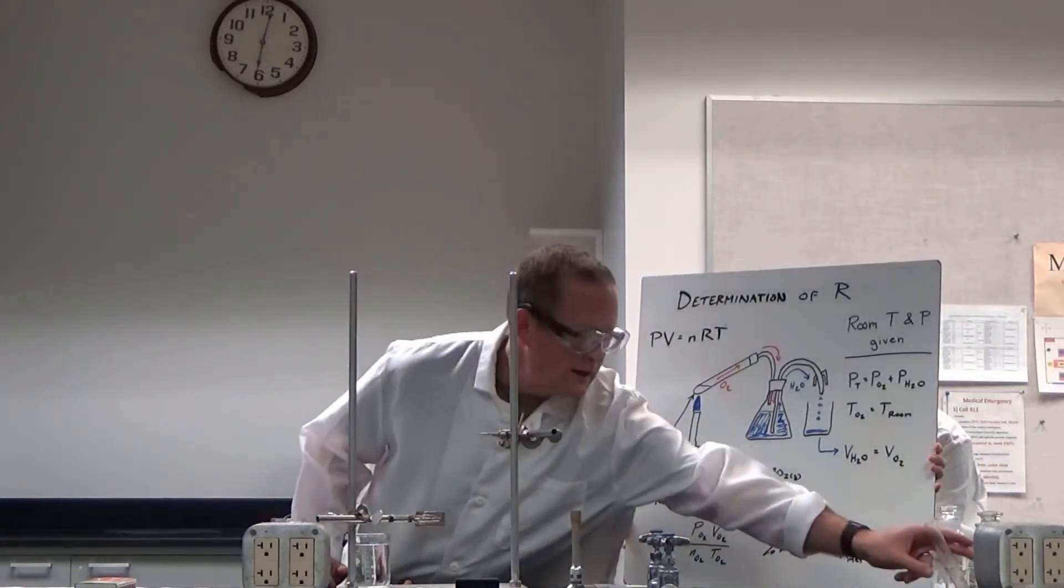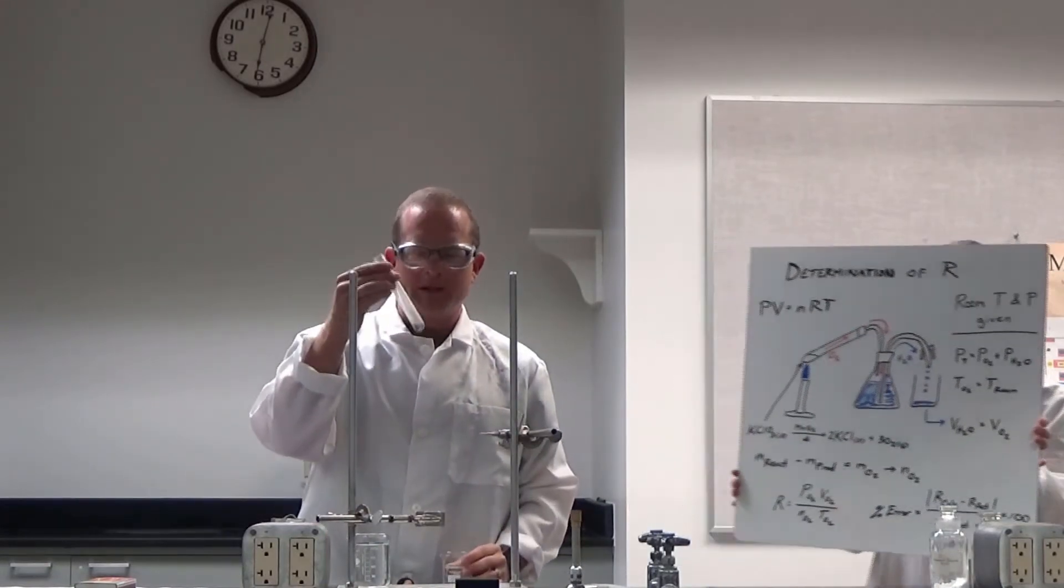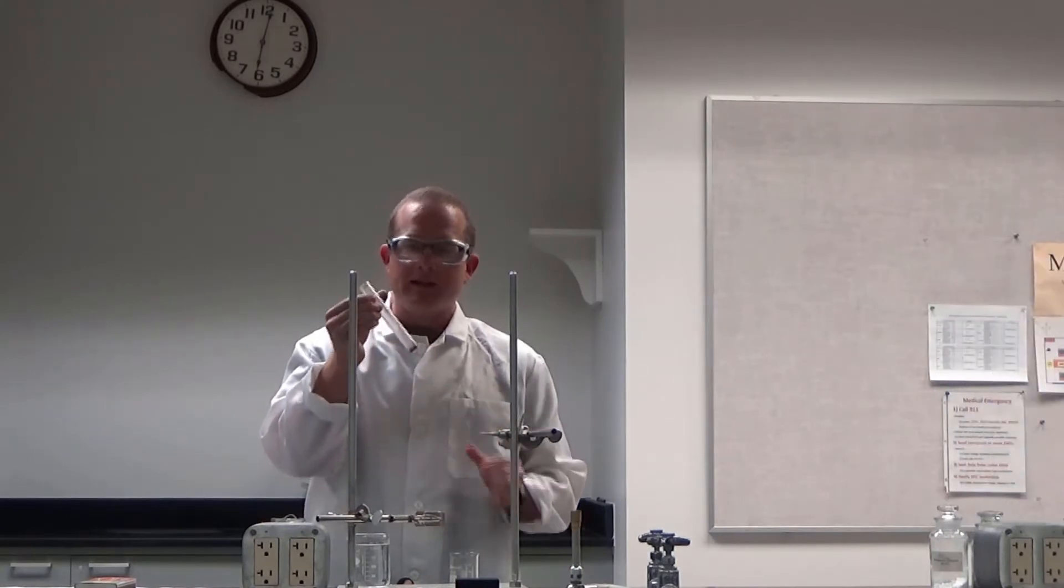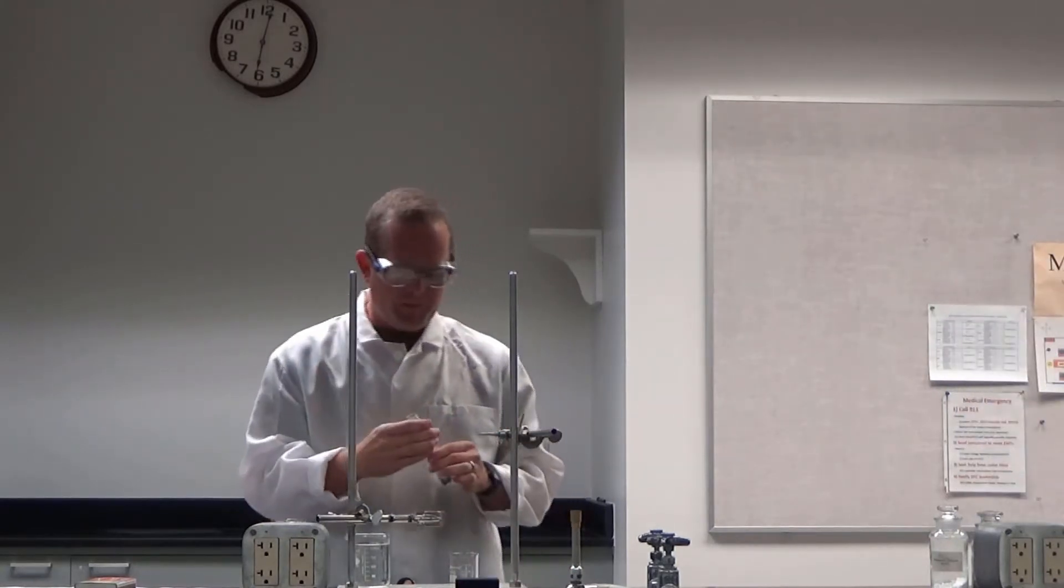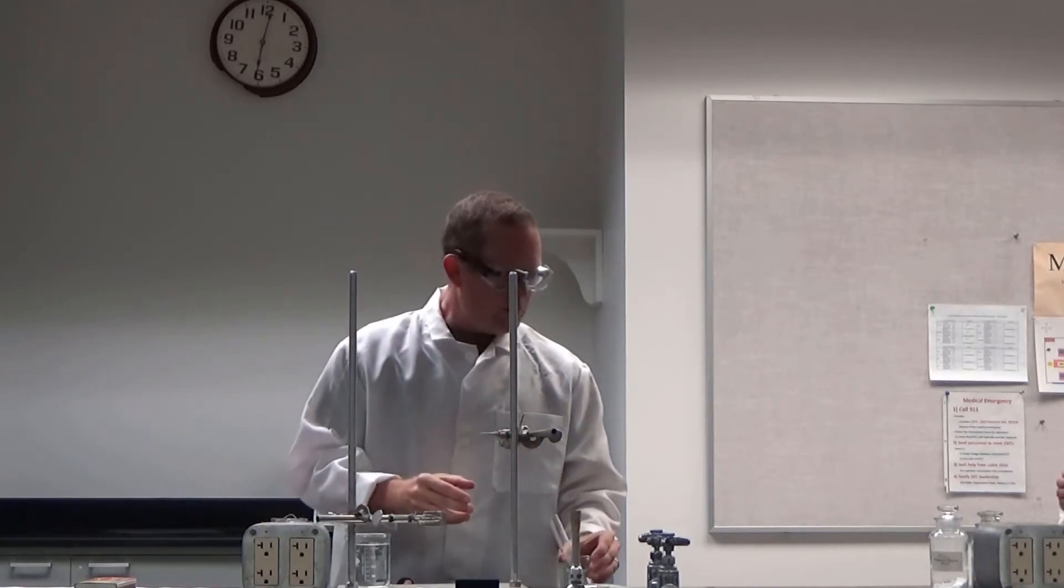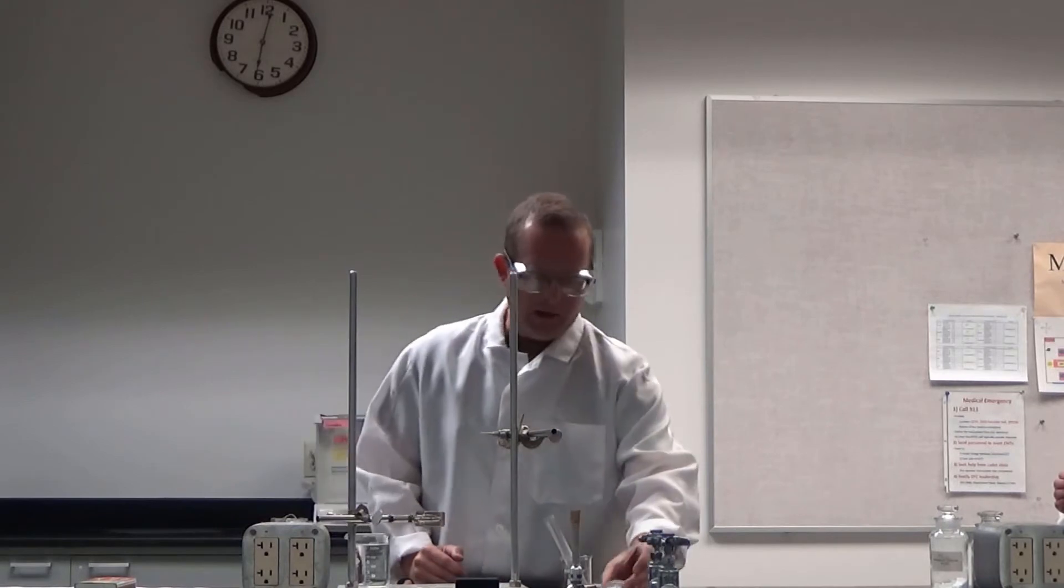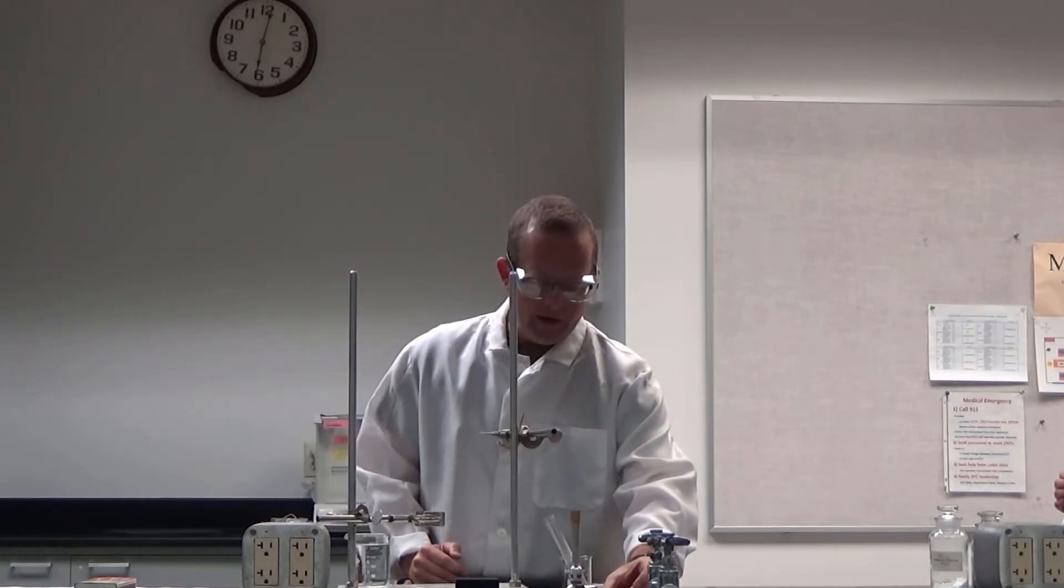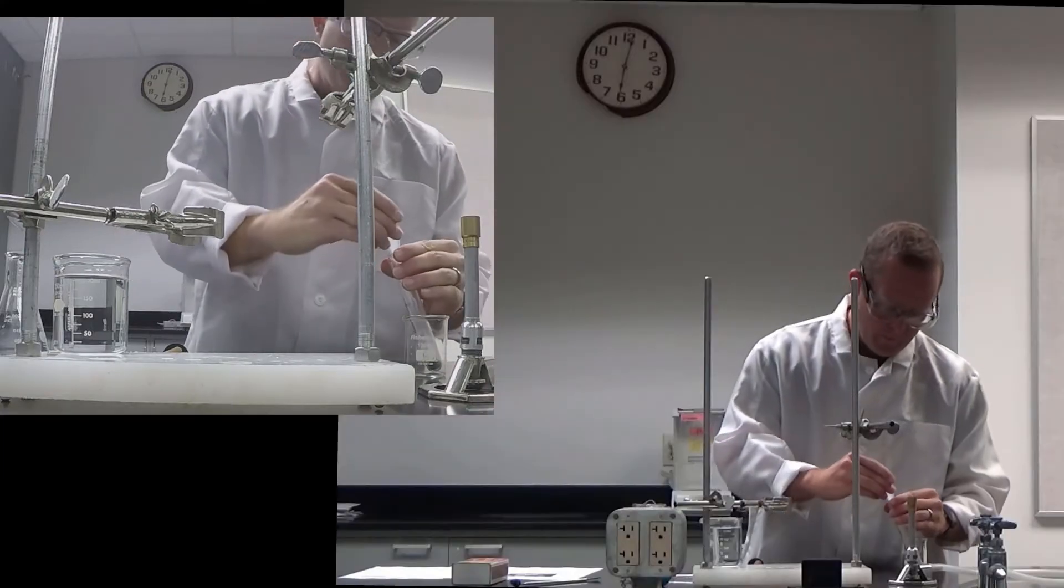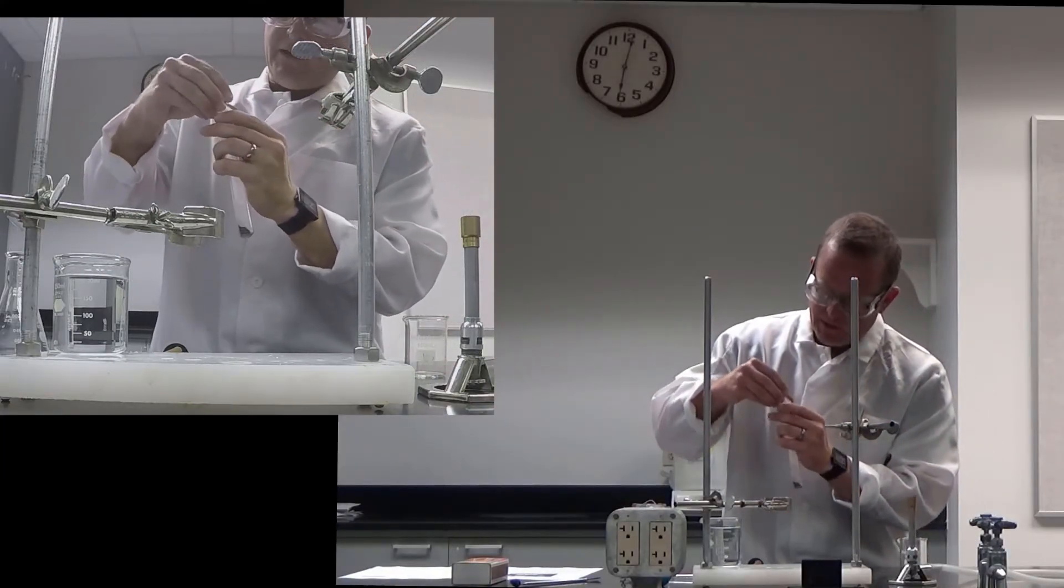So first we have our ignition tube, which looks just like a test tube, but it's much thicker, and it's designed to withstand high temperatures. So here's our ignition tube. To that ignition tube, we'll add about 0.35 grams of potassium chlorate. This looks like a white powder. So we'll dump that in there.